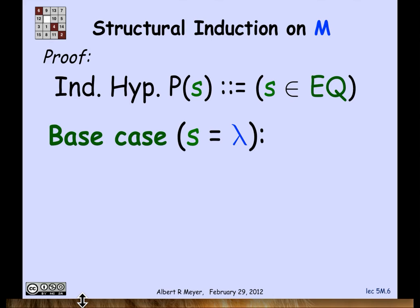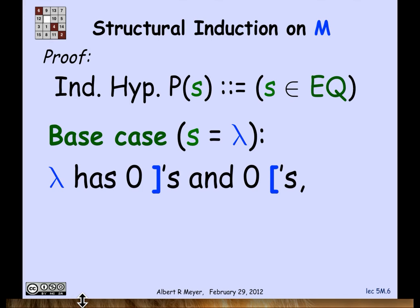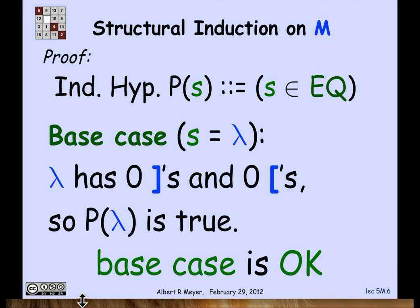Let's remember the definition of M. The base case was the empty string with no brackets at all. Does the empty string satisfy P(s)? Yes, it has 0 right brackets and 0 left brackets, so it does have an equal number. We've established that the base case P(empty string) is true.